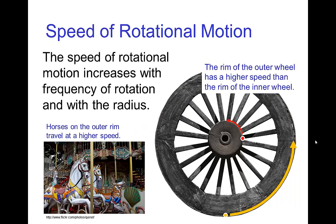Talking about rotation, the speed of rotation is larger for a point on the outer rim. These two points complete one cycle in the same amount of time, but because the circumference is larger for the point on the outer rim, it travels at a higher speed. Same thing with the merry-go-round — the horses on the outer rim travel faster than those on the inner rim, even though it takes the same time to complete one rotation.